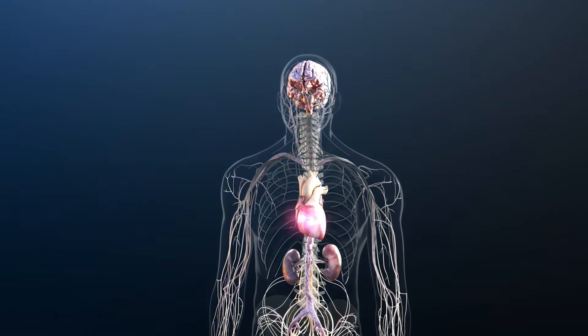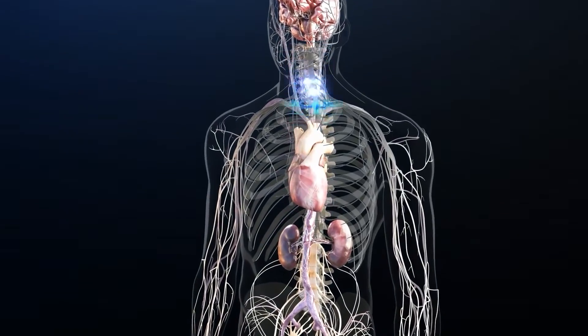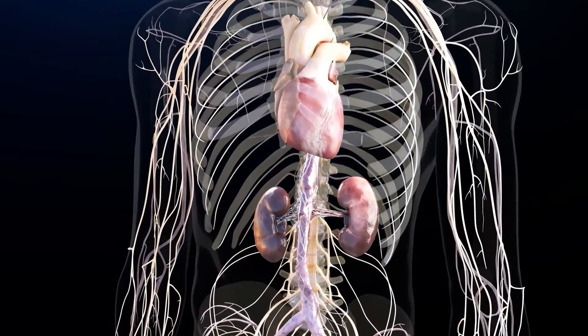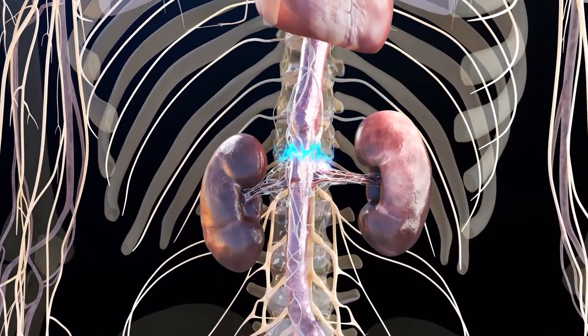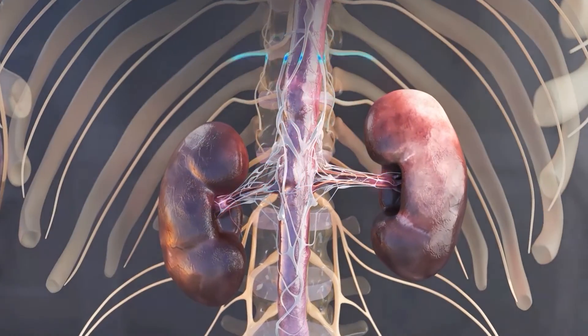Overactivity of the renal sympathetic nervous system is a major contributor to hypertension. Studies have shown that denervation or elimination of the sympathetic nerve pathways along the main branch of the renal arteries to and from the kidney can reduce blood pressure.